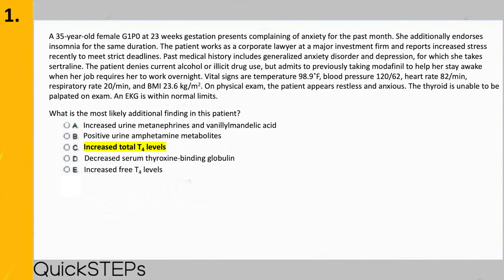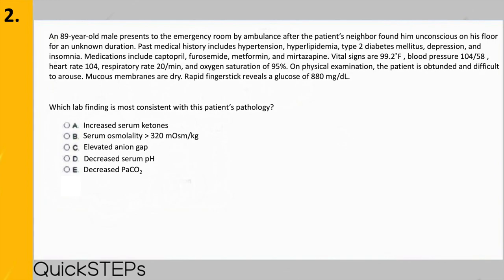However, her vital signs were normal and the thyroid was not enlarged — it is much more likely this patient is having an exacerbation of anxiety due to her stressful job. For the remaining questions, I'd like you to pause before I start reading them and practice doing the method on your own. I will be reading them in full and going over how to arrive at the correct answer. Question two: an 89-year-old male presents to the emergency room by ambulance after his neighbor found him unconscious on the floor.